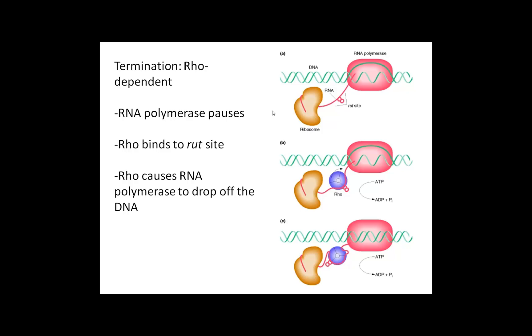The second type of termination signal is called Rho-dependent termination. It is called this because it uses a protein called Rho, which is shown in this figure in blue.